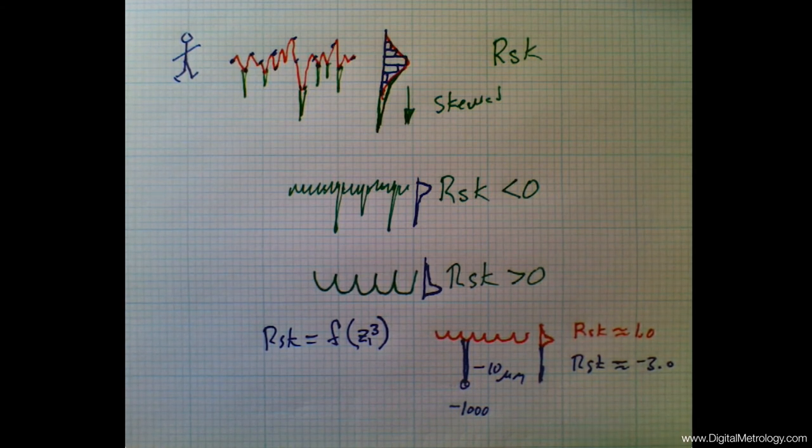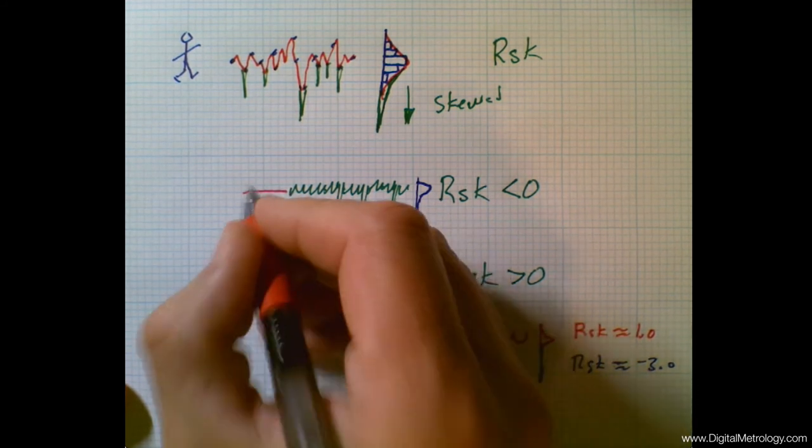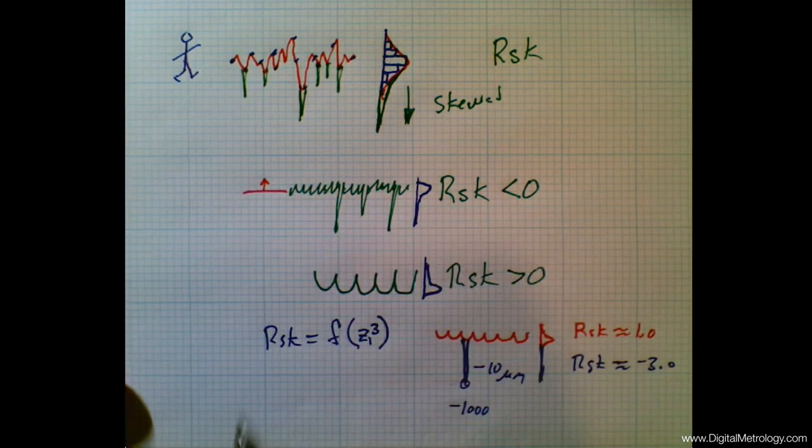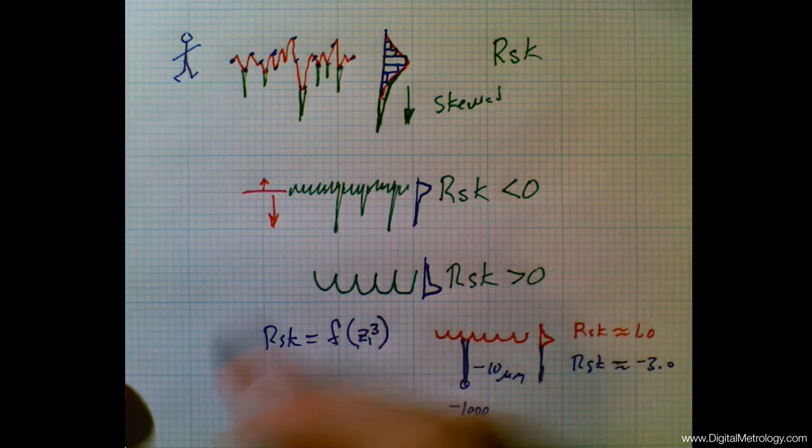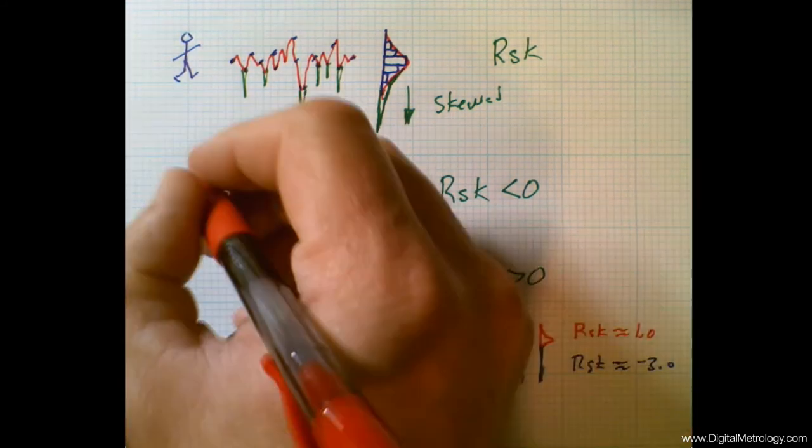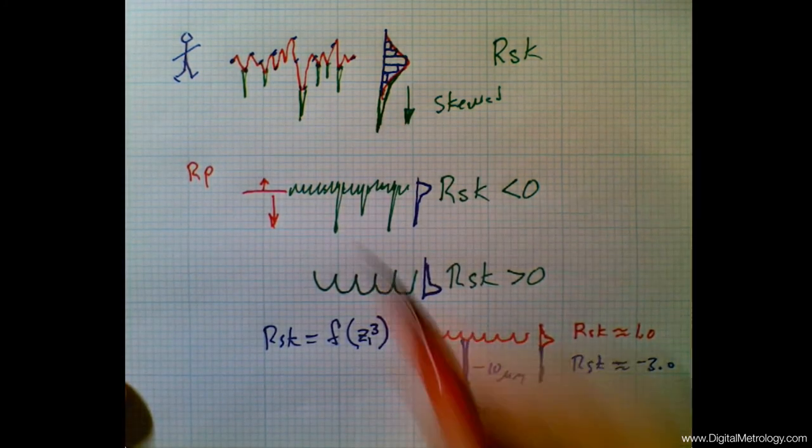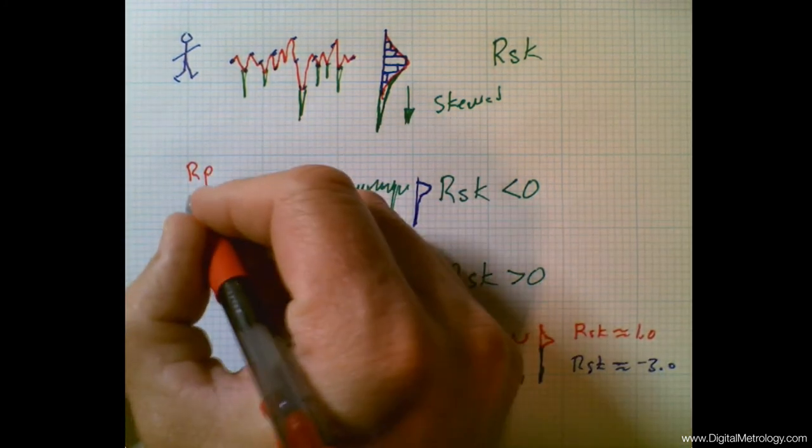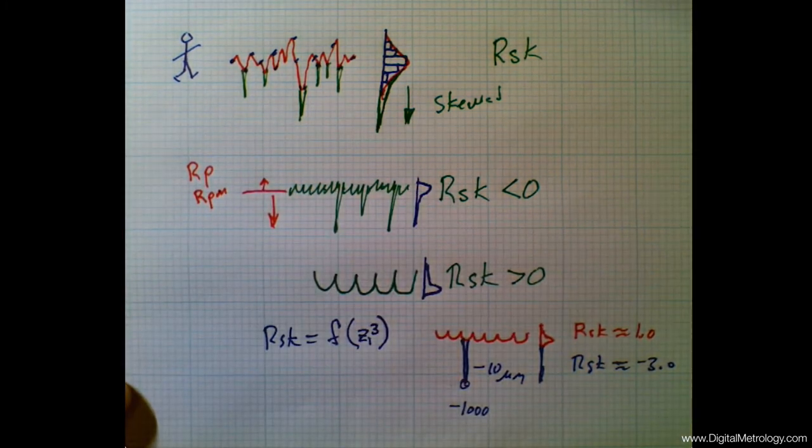So instead of looking at skewness, where it might be intuitively the thing you're going for, I would encourage you to look at the actual parameters you care about. Let's look at this surface in terms of the peak heights. Let's look at the surface in terms of the valley depths, not lumping them together as skewness. For peak heights, I would look at the ISO parameter RP, for example, which averages peaks over sampling lengths. And this is also the same thing as RPM in the American standards.